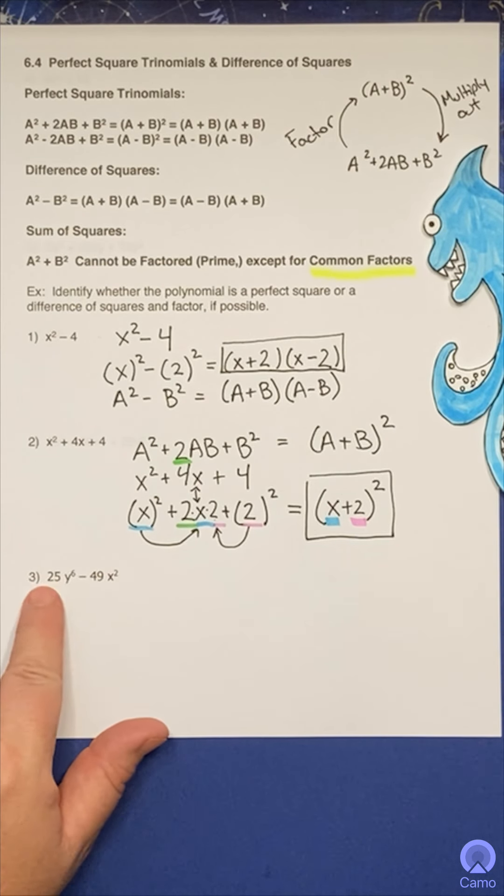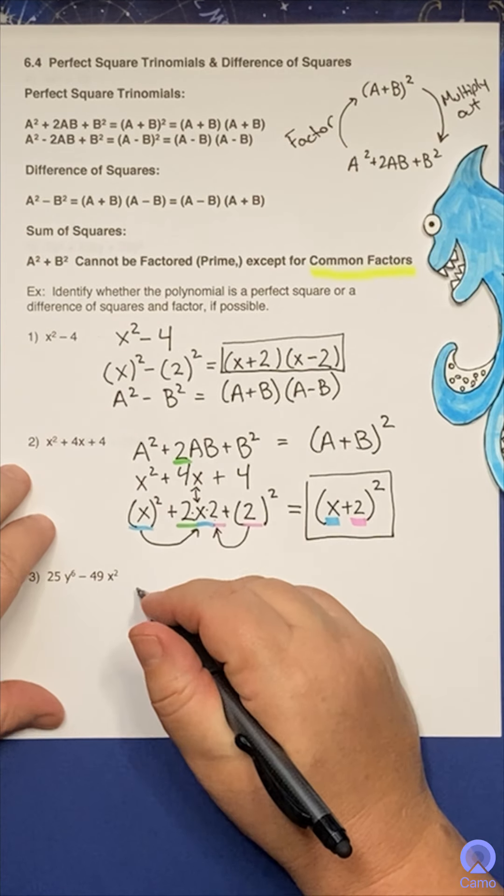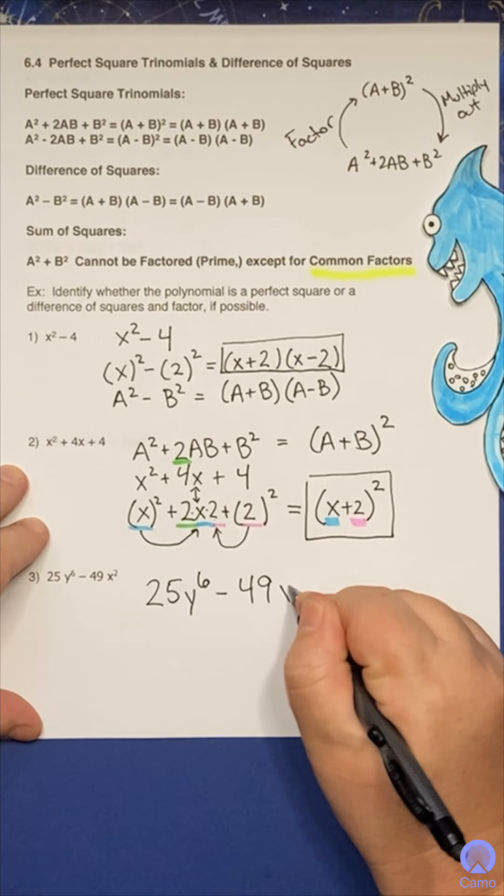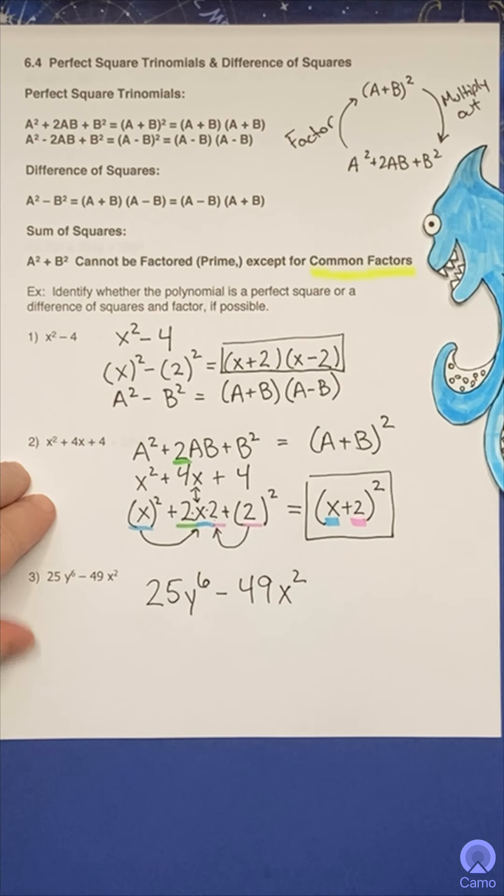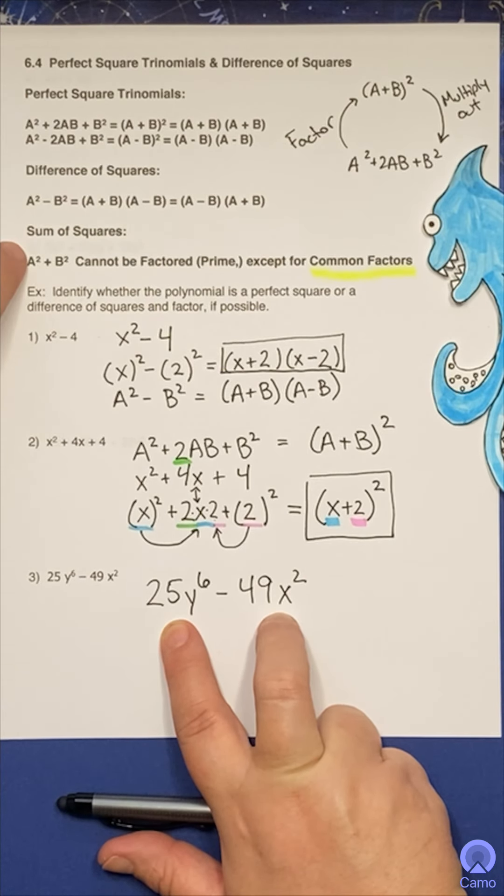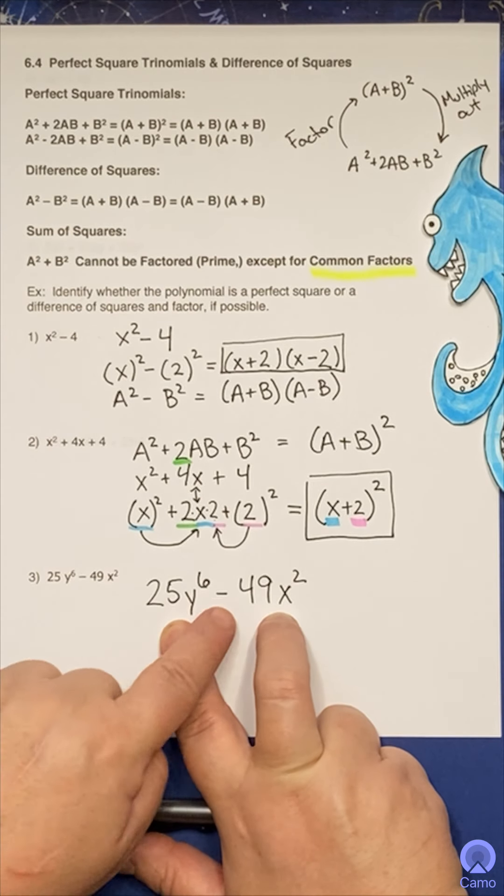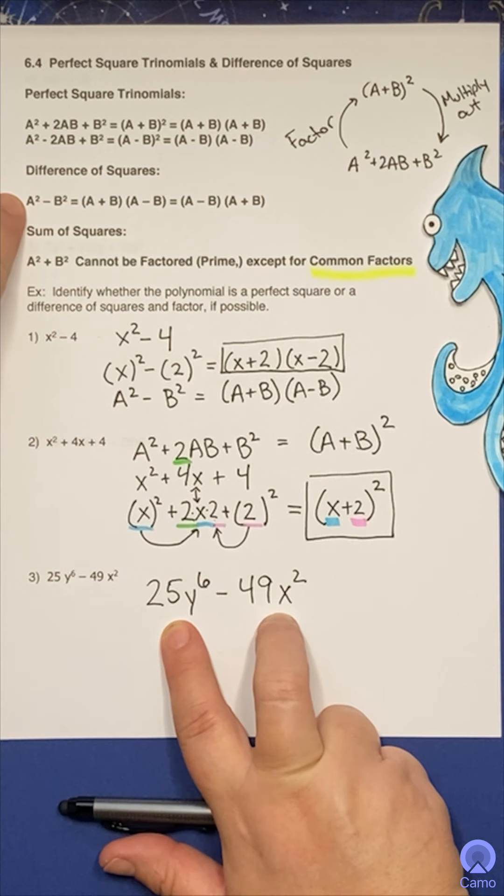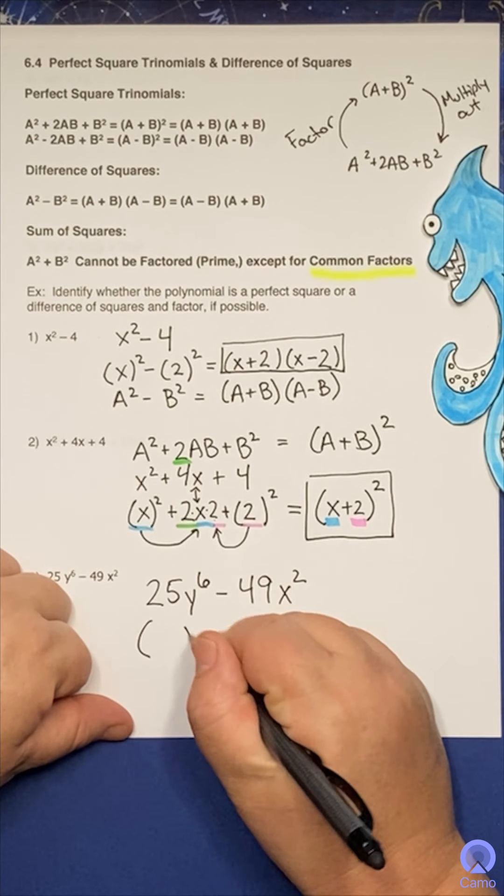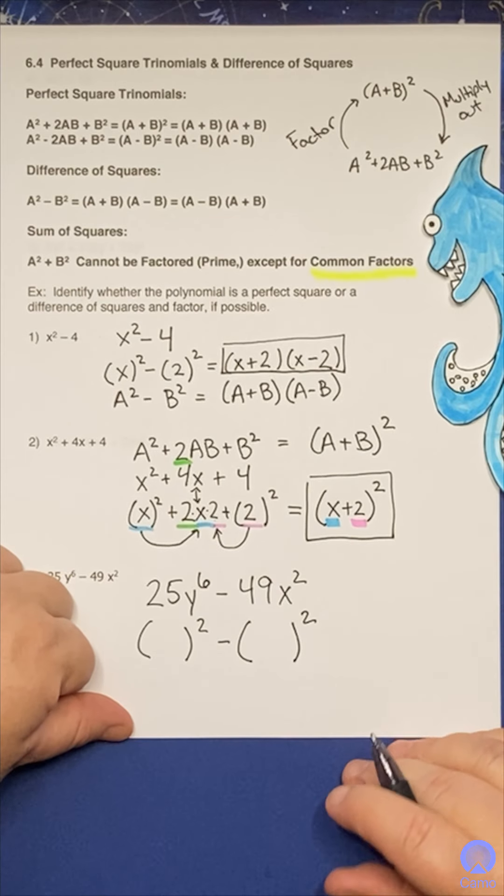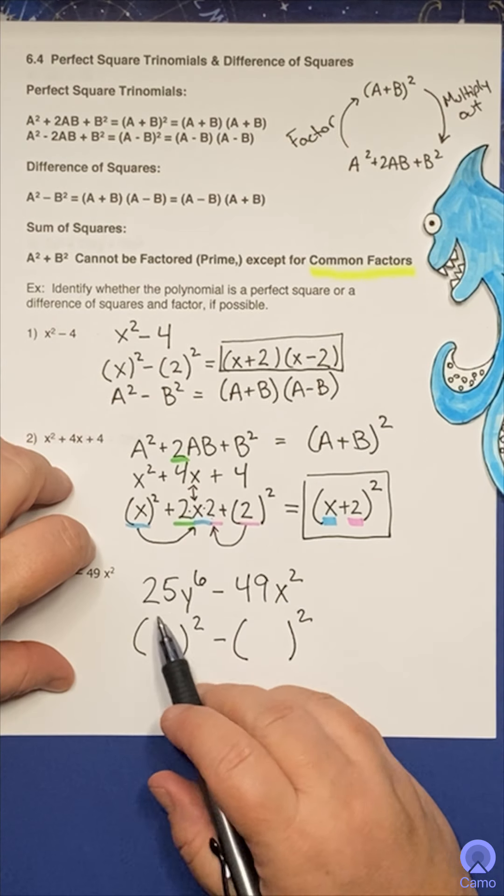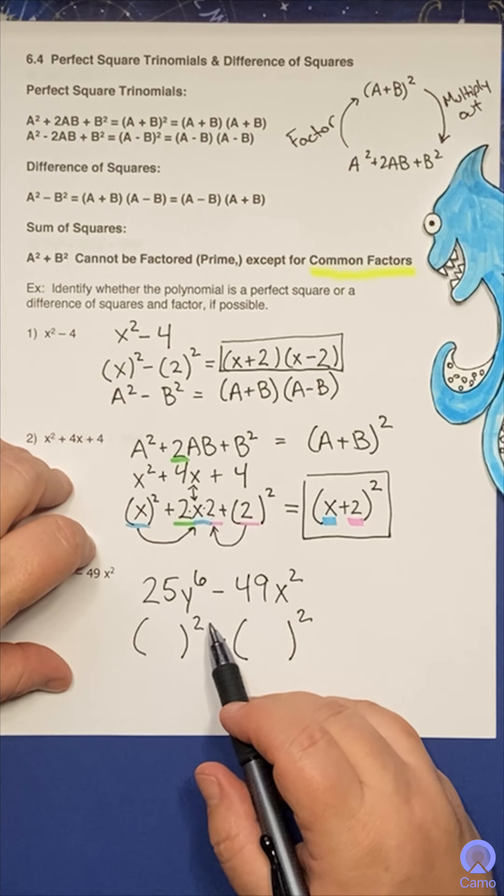Okay. Let's go on to the next one. Good news. The next one has two terms. Now the next one also has two very complicated terms. 25 y to the sixth minus 49 x squared. Oh my goodness. That's a lot. So let's take a look. Two terms. So it's not a trinomial. It's either a difference of squares or a sum of squares. If it matches one of these formulas, since there's a minus in the middle, the only one it can match is a difference of squares.